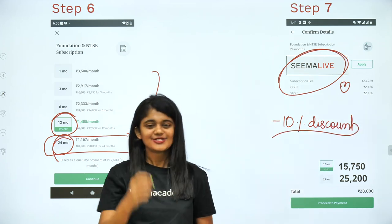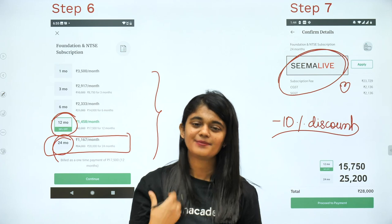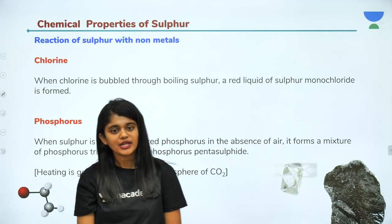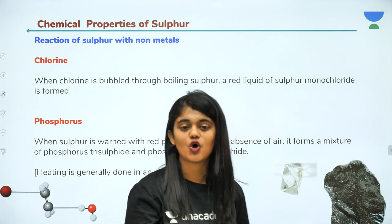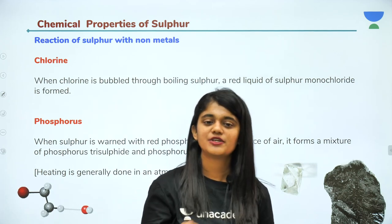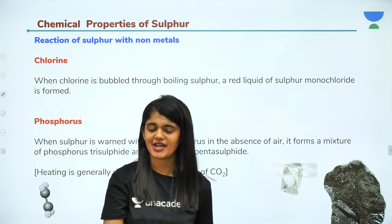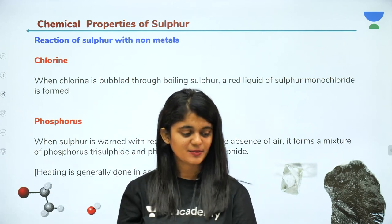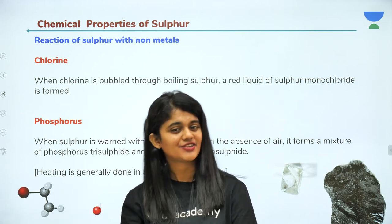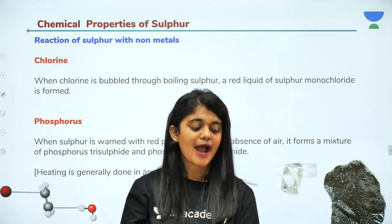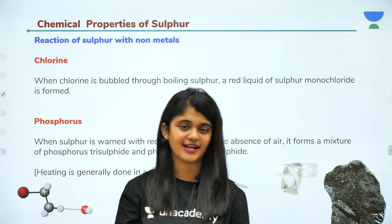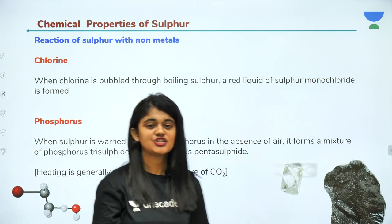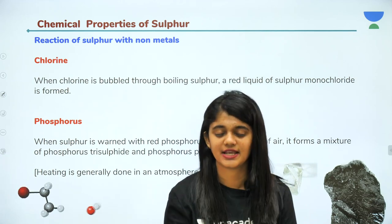Now continuing with the chemical properties of sulfur — in the last class we saw reactions with oxygen and carbon, and also with hydrogen. Now we are moving forward to see the reactions of sulfur with chlorine.